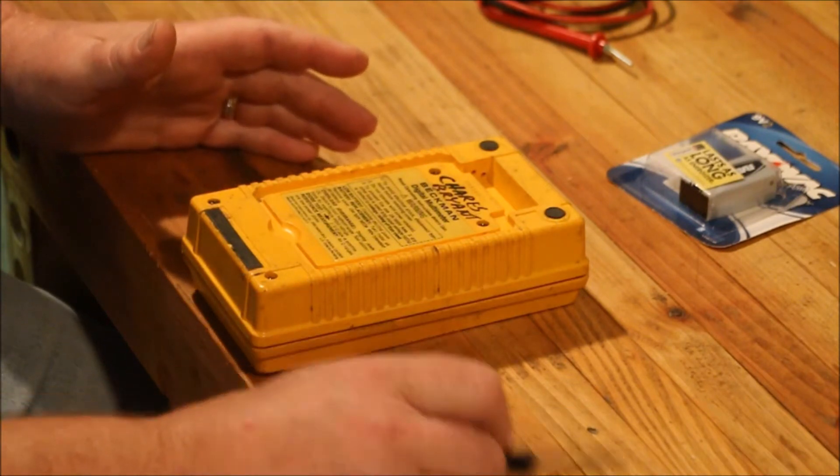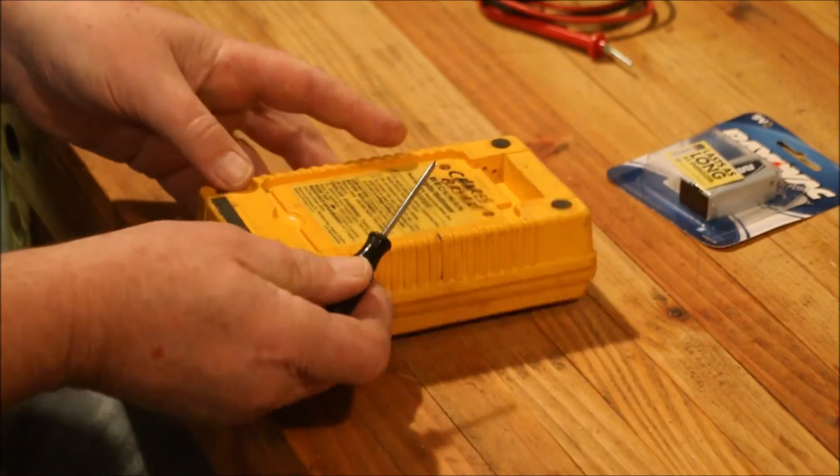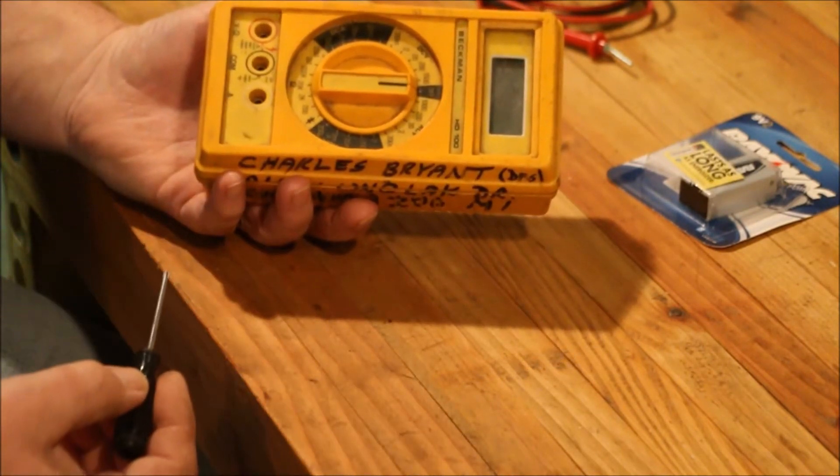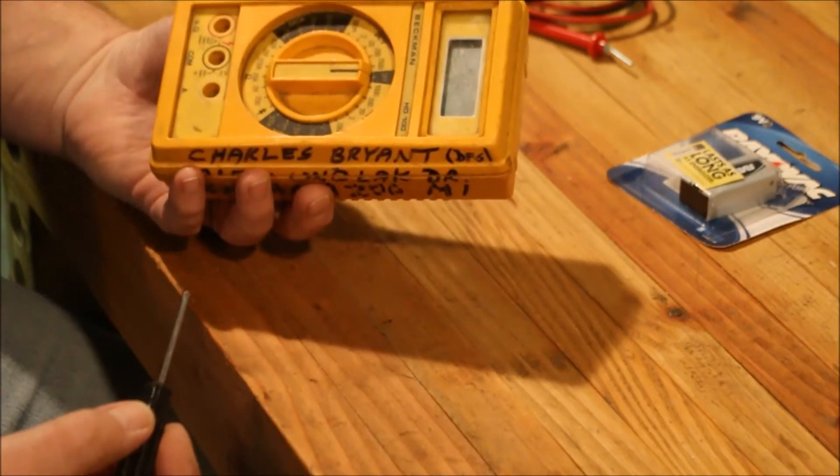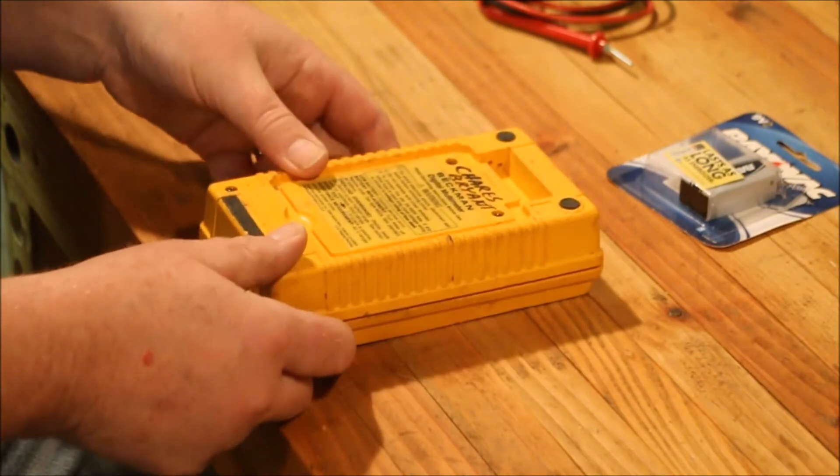All the manuals I'm finding are for the 1100, which people tell me is very similar, but the 1100 has an extra socket on the front and also has a thermocouple socket on the top. So it is slightly different.